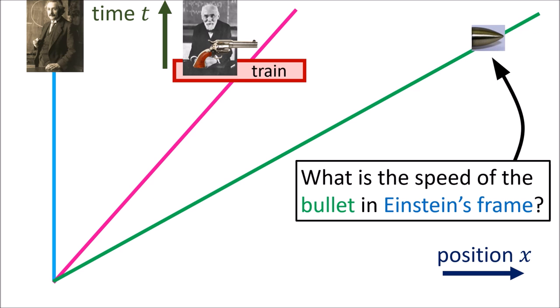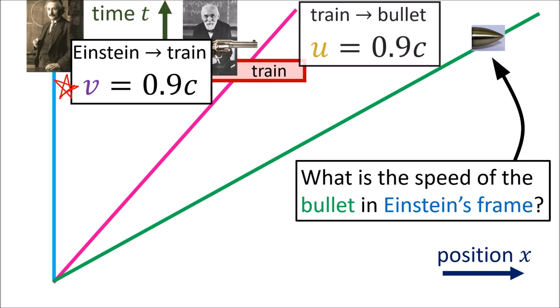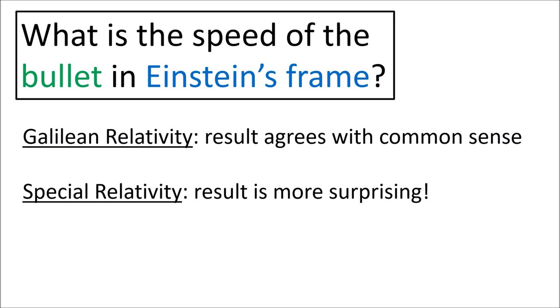Figuring out how fast the bullet is traveling in Einstein's frame would involve changing reference frames twice — first from Einstein to the train, and then again from the train to the bullet. In Galilean relativity we'll find that the speed of the bullet agrees with common sense, but in special relativity the answer is more surprising.